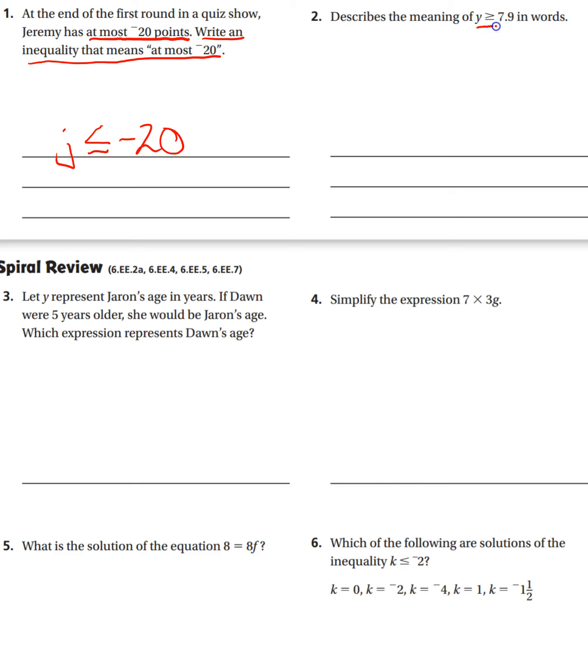Okay, describe the meaning of Y ≥ 7.9 in words. We would just say Y must be greater than, because the opened end is facing the Y, so Y has to be greater than. It does have the line underneath, so or equal to 7.9.